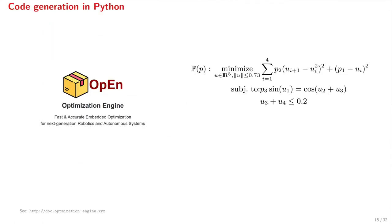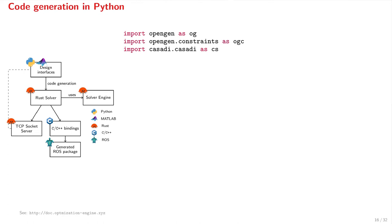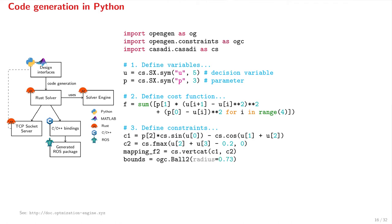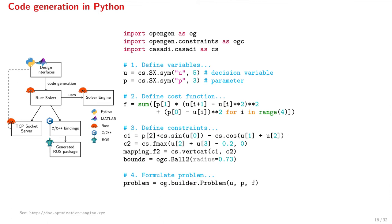As an example, let us use OPEN in Python to generate a parametric optimizer for this optimization problem, which we can write in the standard form I mentioned earlier, using this mapping F2. We start by some necessary imports. We define the decision variable U and the parameter P as symbolic variables. Next, we define the cost function, mapping F2, the bounding ball of radius 0.73, and we formulate the problem like this.